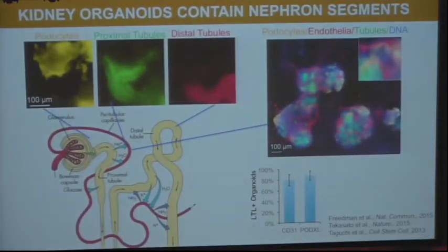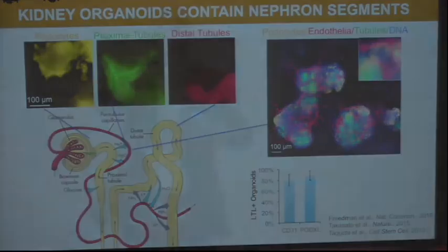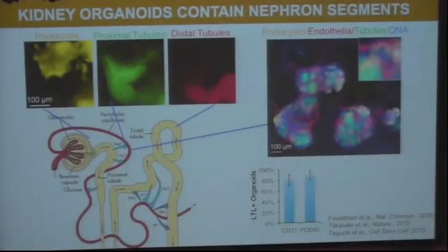Looking closer at the organoid structures, they have an architecture resembling the nephron — podocyte cells as the filtering component leading directly into proximal tubular epithelial cells and then to distal tubular cells, separable by specific markers. There are also endothelial cells, marked with CD31, arising naturally in these cultures and glomming onto the organoids. In fact, about 80% of proximal tubular-containing organoids also have endothelial cells and podocytes arising within them — the organoid is really trying to make a nephron.